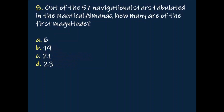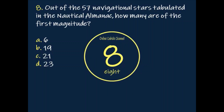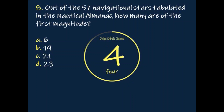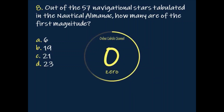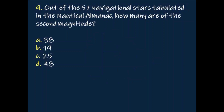Question: Out of the 57 navigational stars tabulated in the nautical almanac, how many are of the first magnitude? Answer: 19.